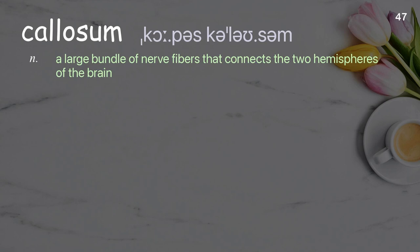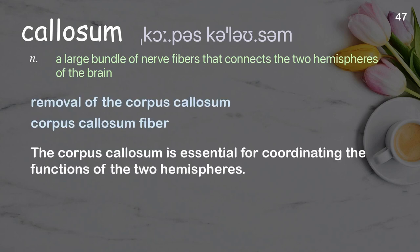Corpus Callosum: a large bundle of nerve fibers that connects the two hemispheres of the brain. Examples: removal of the corpus callosum, corpus callosum fiber. The corpus callosum is essential for coordinating the functions of the two hemispheres.